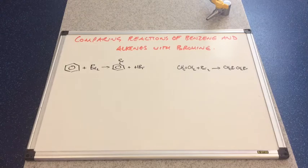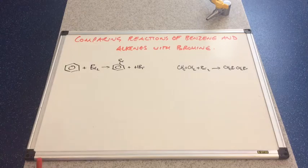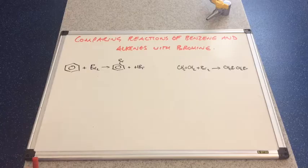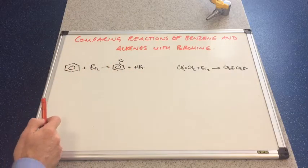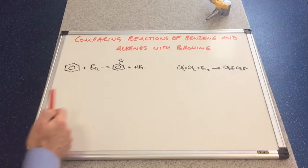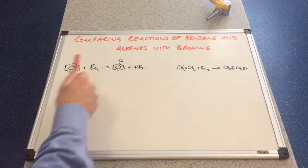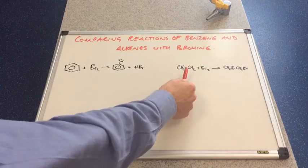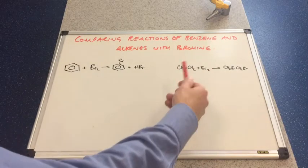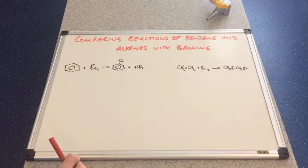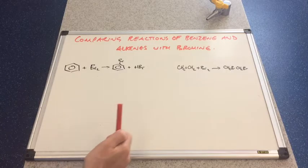In this video I'm going to compare the reactions of benzene and alkenes with bromine. So I've written up on the board the reaction between benzene and bromine to make bromobenzene and HBr. I'm going to use ethene as my example of an alkene, but what we're going to say about alkenes is relevant to all alkenes.